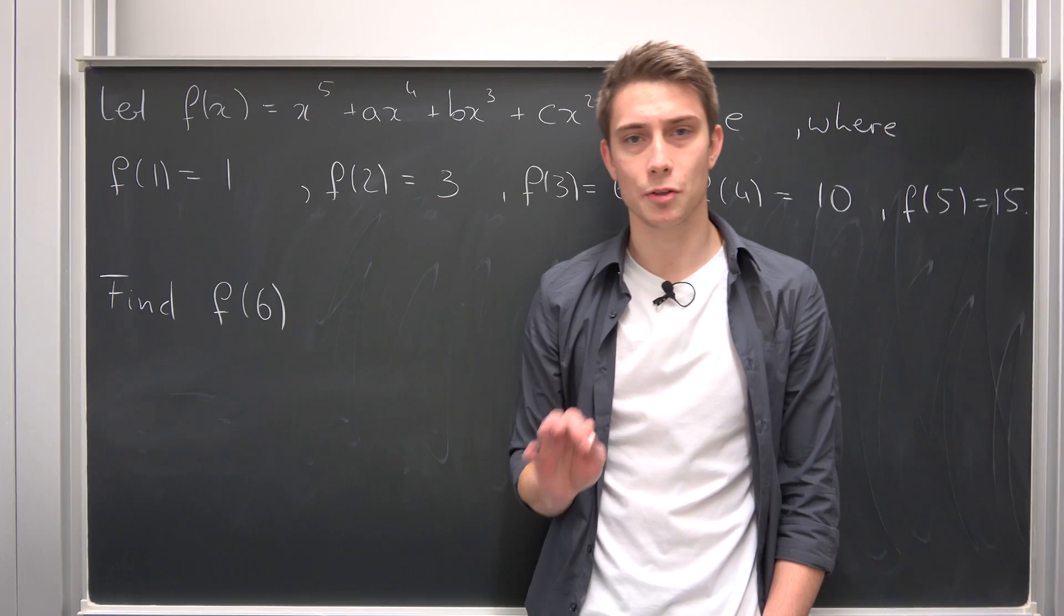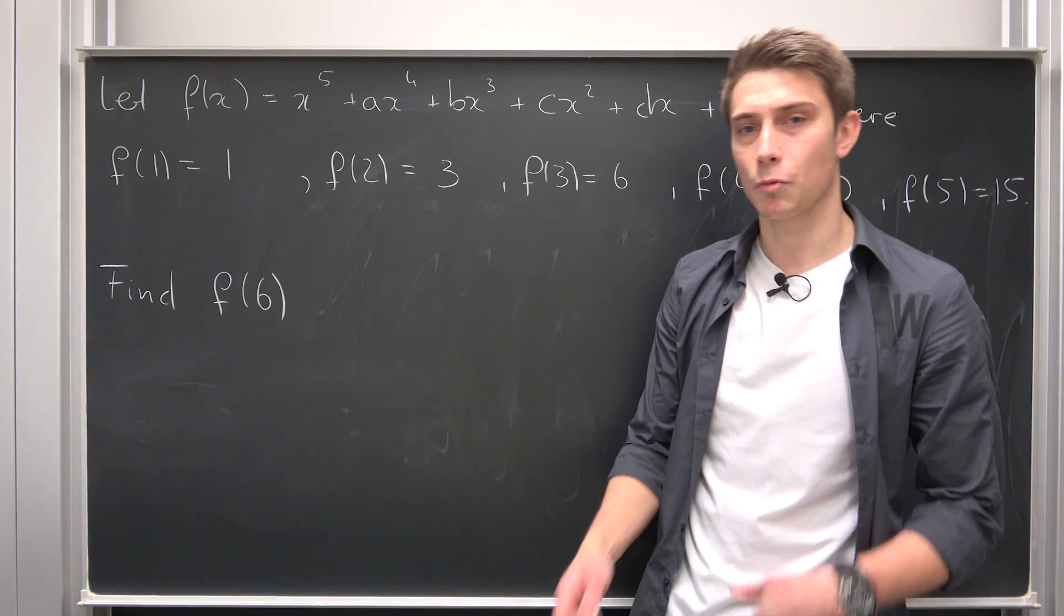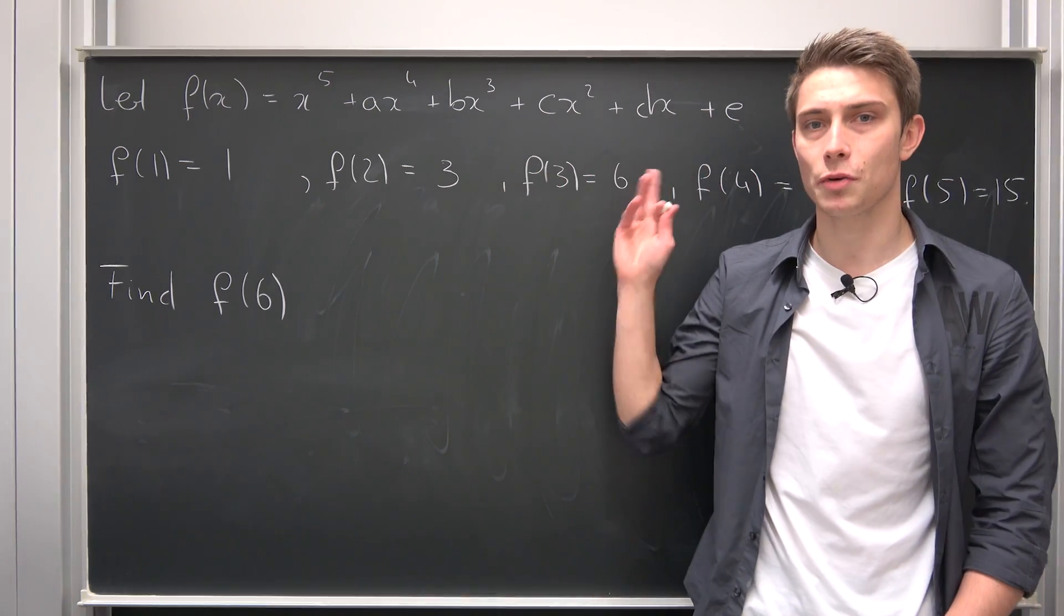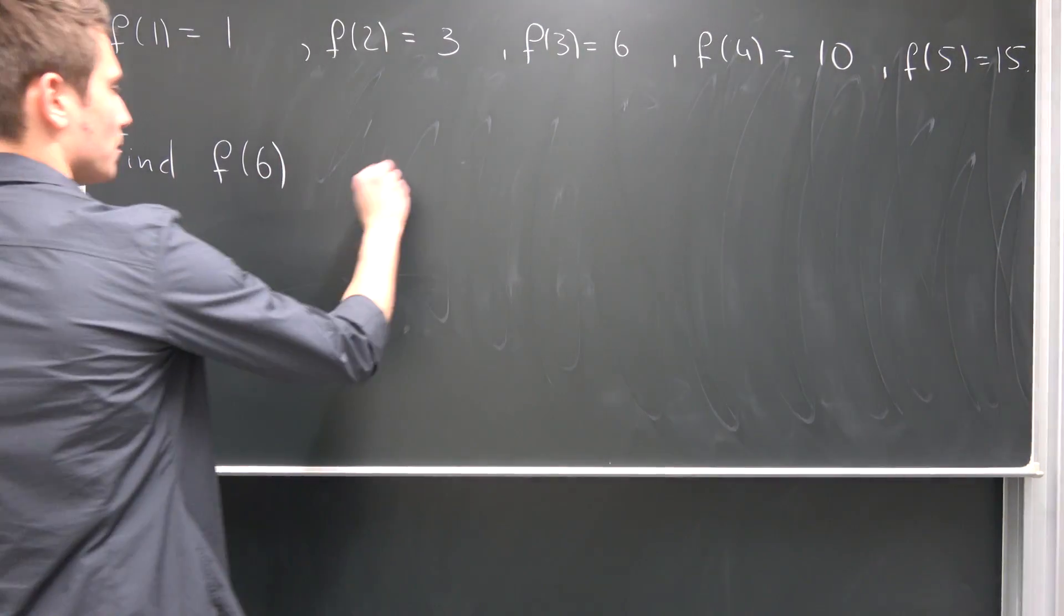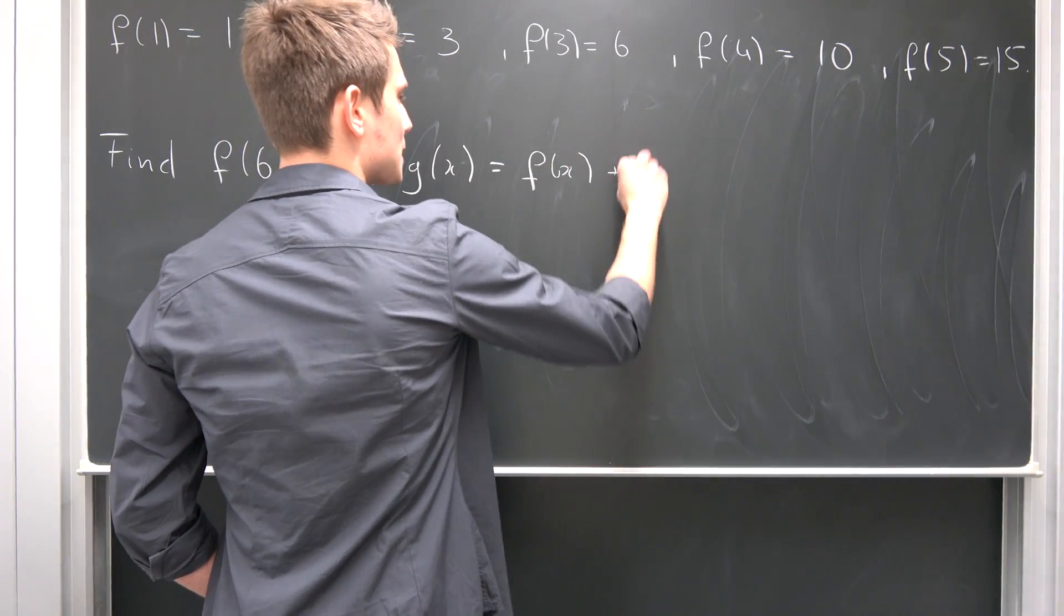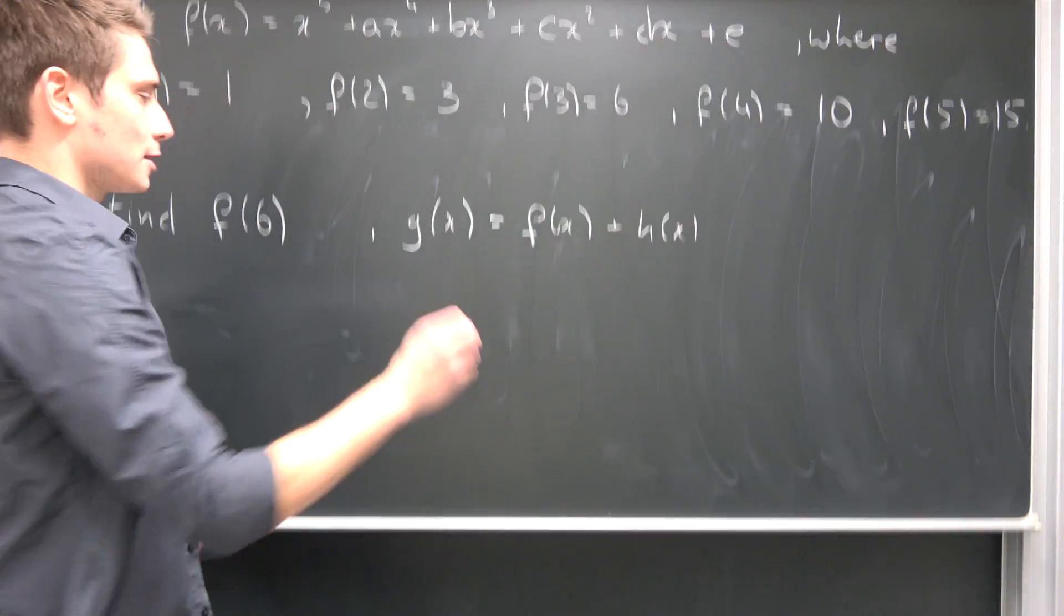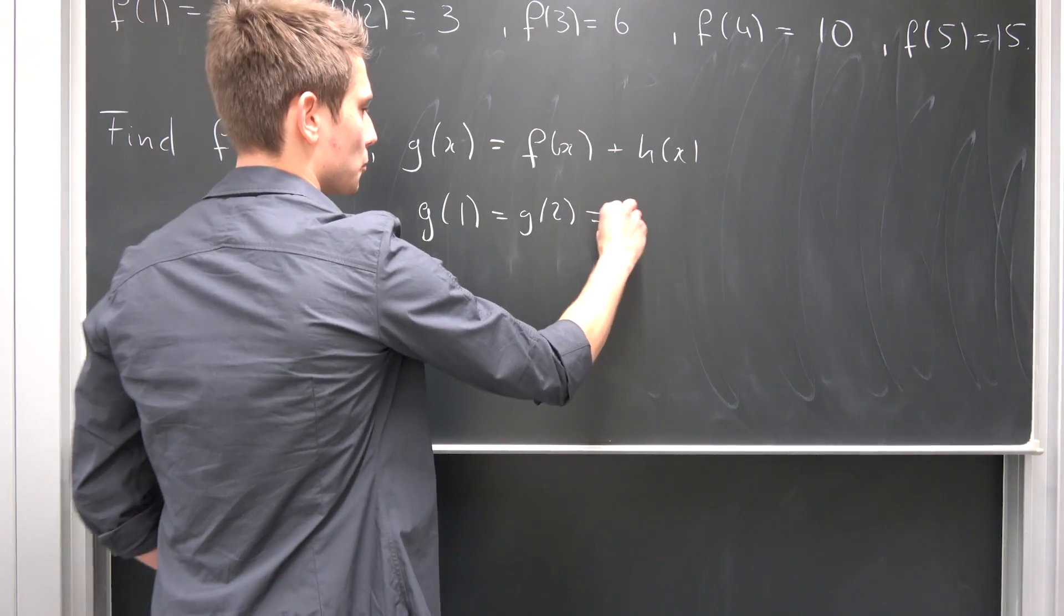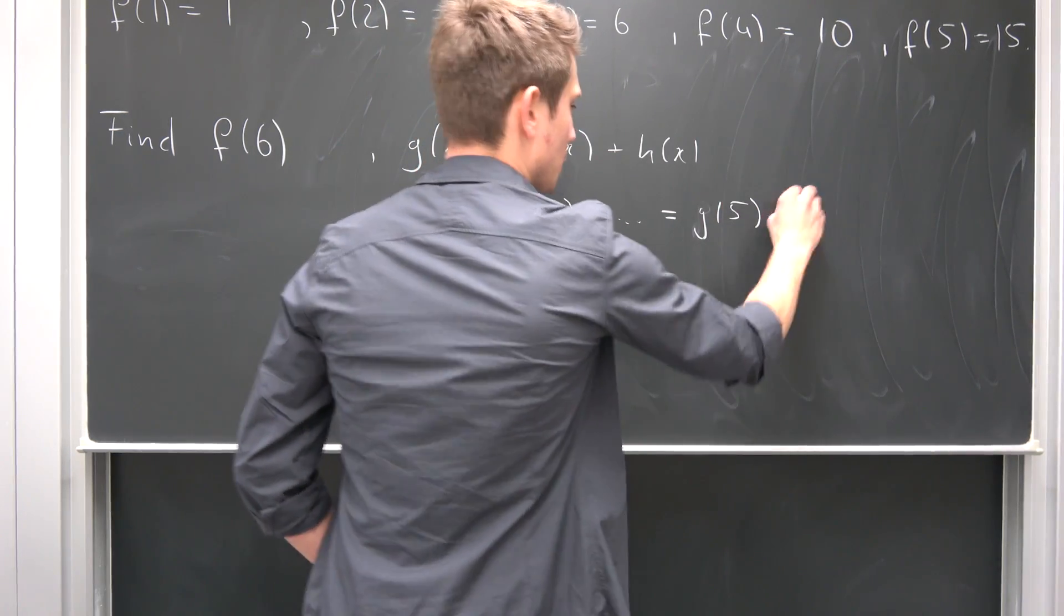Well, there's a strategy you might have seen before. It's often used in algebra actually. What you want to do? We want to construct ourselves a new polynomial where those initial values right here are going to be our roots. Meaning we want to find out, for example, some g of x being equal to, well, f of x plus some unknown h of x such that those are our roots. So such that g of 1 is equal to g of 2 is equal to blah blah blah, it's going to be equal to g of 5, being equal to 0.